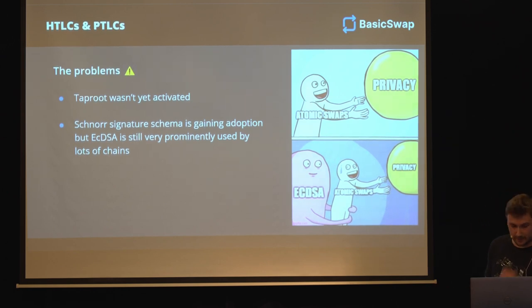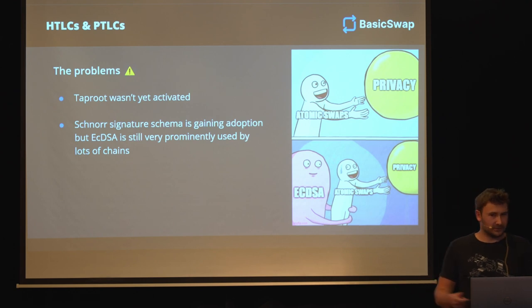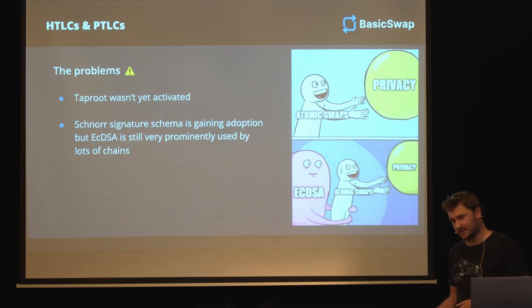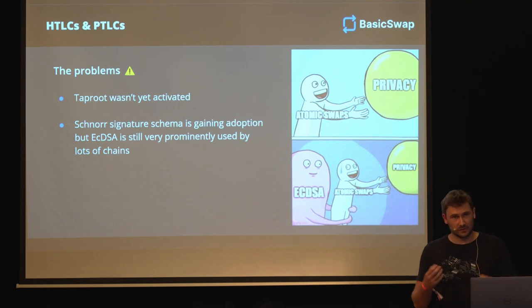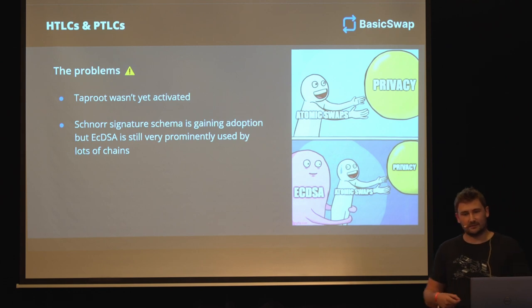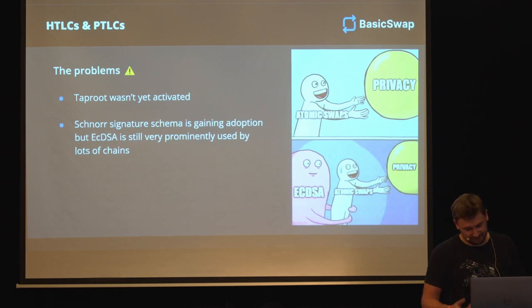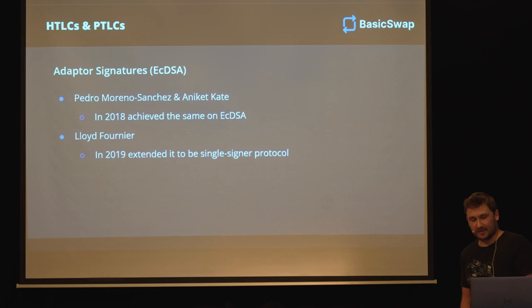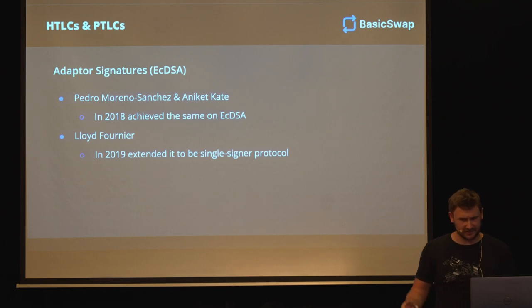So what are the problems with this? Back in the day, Schnorr signatures were not possible, so Taproot wasn't yet activated. And ECDSA is another way to make signatures that was still very prominently used by a lot of chains. So if you want to build a successful DEX and support lots of coins, you're going to need to have adapter signatures not only for Schnorr signatures. ECDSA is basically a different way of producing a signature - imagine it like signing with your right hand, and ECDSA is like signing with your left hand. Adapter signatures for ECDSA were built by Pedro Moreno-Sanchez and Aniket Kate in 2018, and then Lloyd Fournier in 2019 extended it to be a lot more practical.